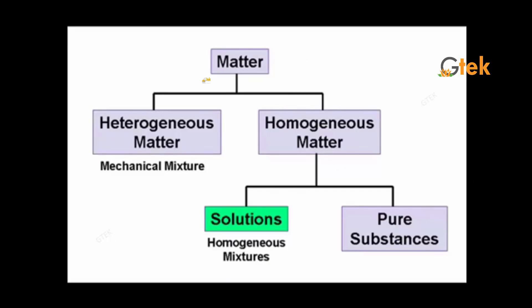Matter is of two types: heterogeneous and homogeneous. Heterogeneous matter is a mixture of multiple ingredients. Homogeneous matter has a singular kind of composition without major varieties of ingredients. Under homogeneous matter, you have solutions — which we are going to see now — and apart from that, you also have pure substances. So solutions are nothing but homogeneous mixtures.